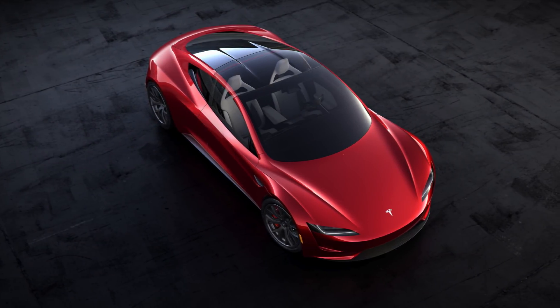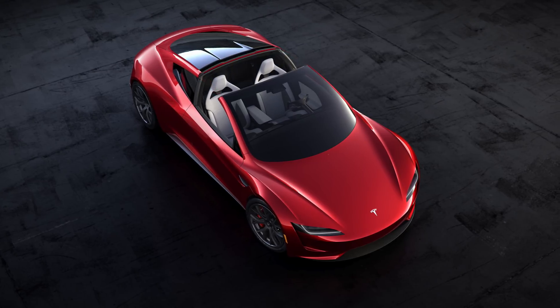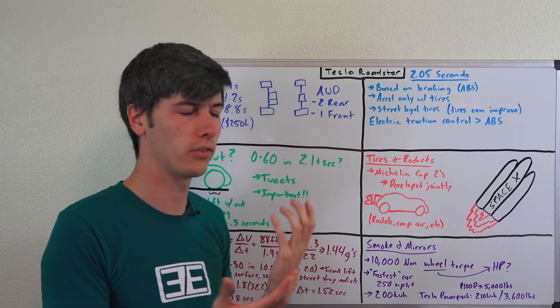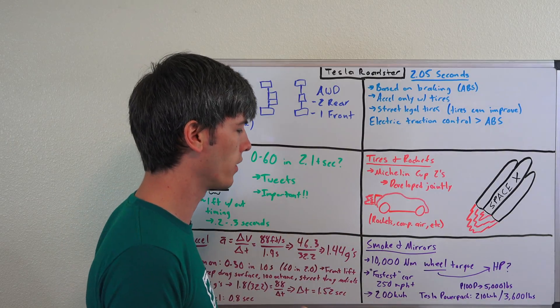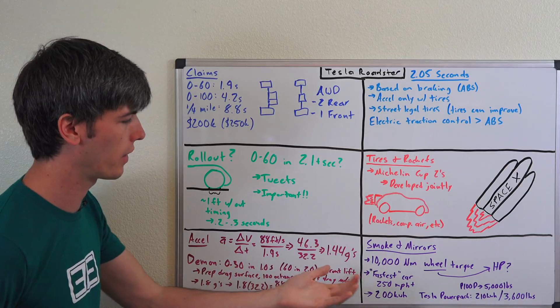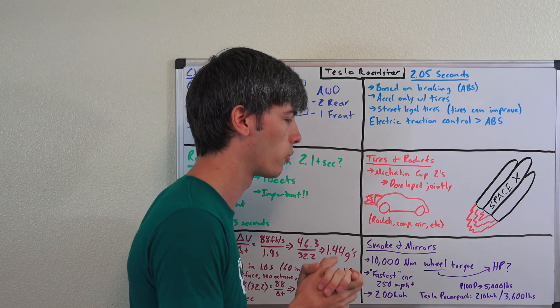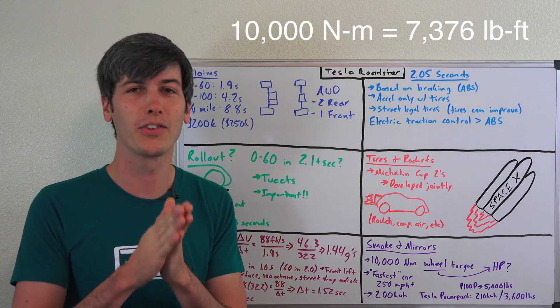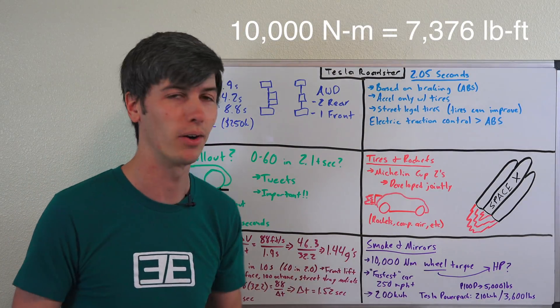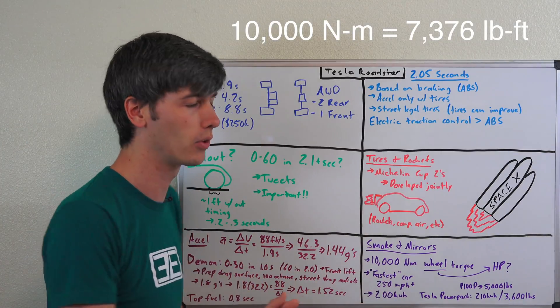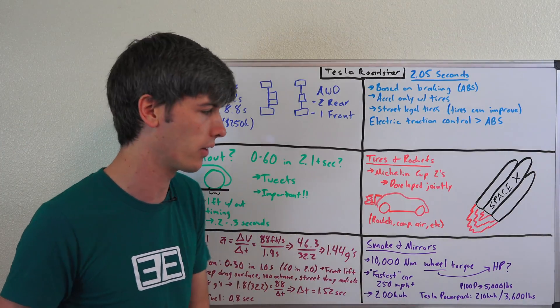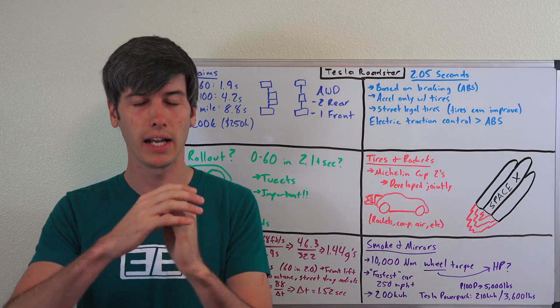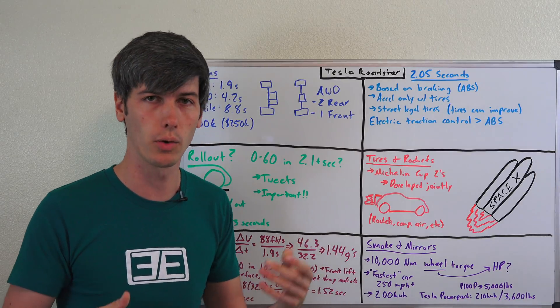Alright, my final segment: smoke and mirrors. There's a little shadiness going on with this product launch and I kind of just want to talk about that. Some of the numbers that they say people get super excited about, but they're without context and ultimately they're meaningless. So that's what I wanted to talk about here. 10,000 newton meters of wheel torque. That's their claim of how much wheel torque this makes. Great, that tells us absolutely nothing. It's a huge number and it probably will have a ton of torque, but this tells us absolutely nothing because we don't know how much power the car makes.